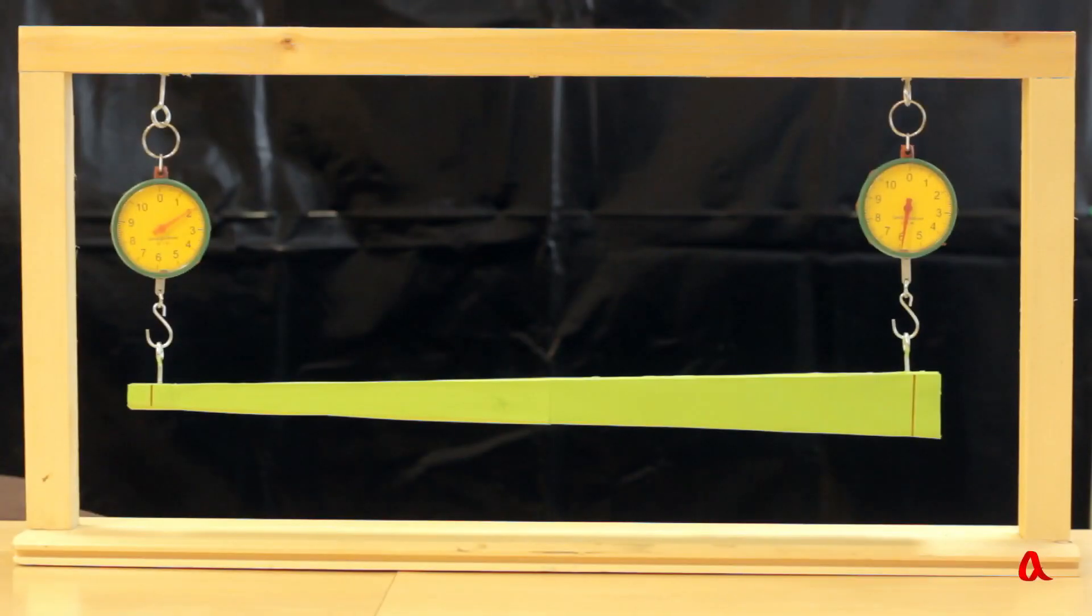You can see a beam which is thick on one end and thin on the other. If two people take it by the ends, the loading a person will experience will be 2 units for one and 6 units for the other.